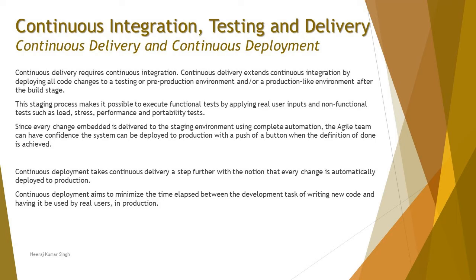At this stage, it is possible to execute functional tests using real user inputs, as well as non-functional tests such as load, stress, performance, and portability testing — all done before the production phase. Since every change is delivered to the staging environment through complete automation, the agile team can have confidence the system can be deployed to production with a push of a button when the definition of done is achieved.